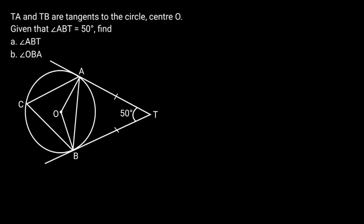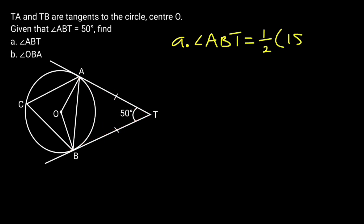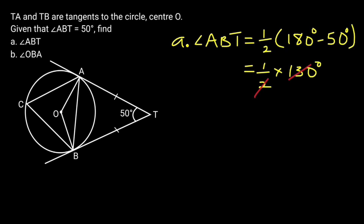TA and TB are tangents to the circle, center O. Given that angle ATB is equal to 50 degrees, find A) angle ABT and B) angle OBA. Solution A: Triangle TBA is isosceles. Reason: Tangent TA is equal to tangent TB. Hence angle ABT is 1/2 times (180 degrees minus 50 degrees), that is 1/2 times 130. Dividing through by 2, angle ABT is equal to 65 degrees.